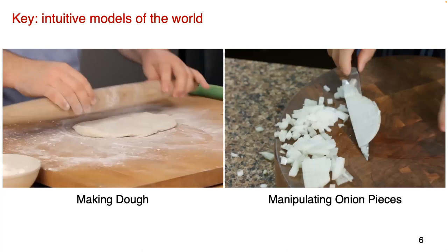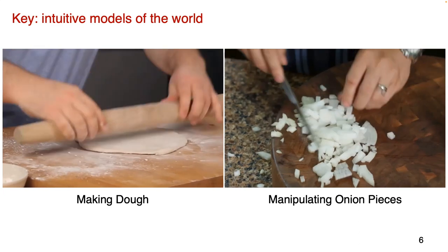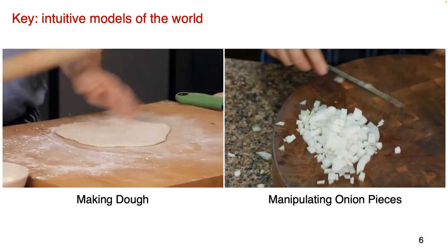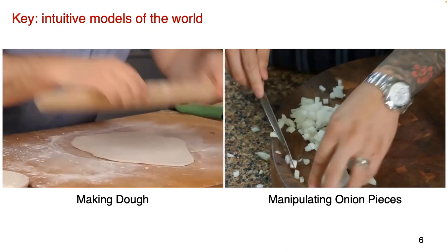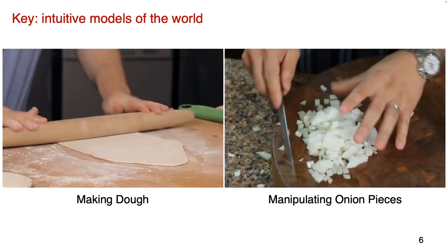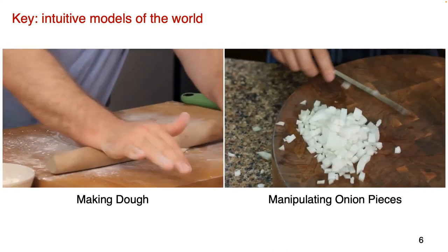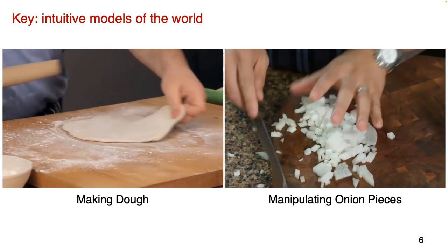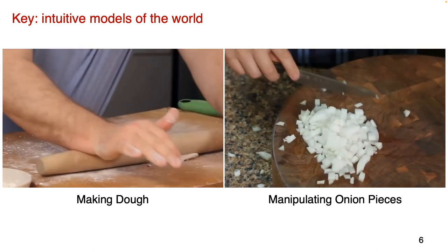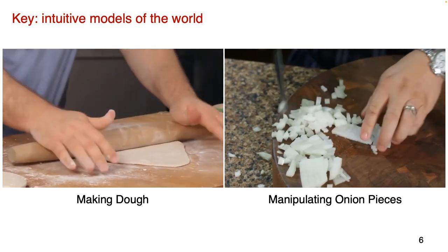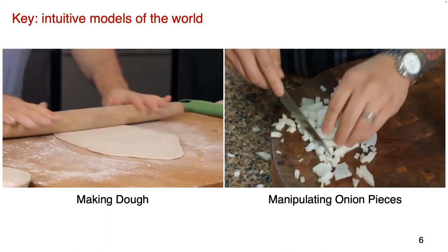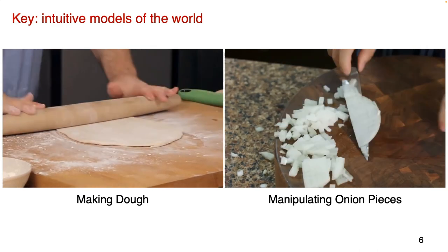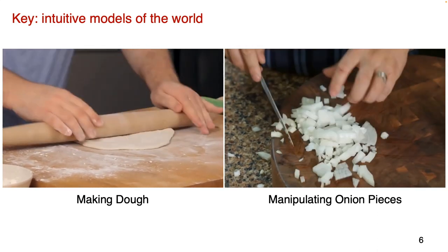Instead, we humans have intuitive models of the world that predict how the environment would change if we apply a specific action. For example, looking at two videos of manipulating very different objects — one is dough, the other is a pile of onions — we can effortlessly predict the effect of our action: how the dough will deform and how the onion pieces will move around. This predictive ability then helps us plan our behavior to achieve a specific goal.